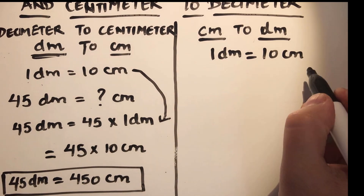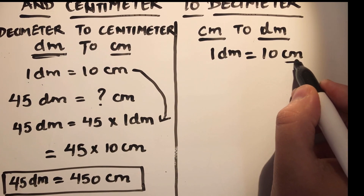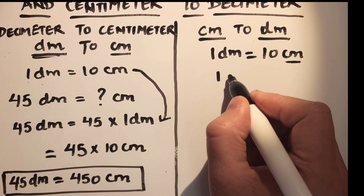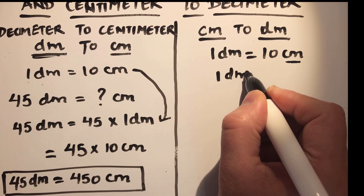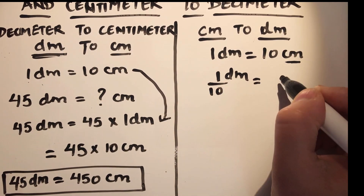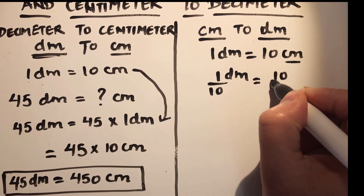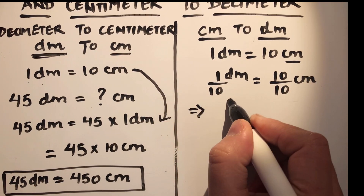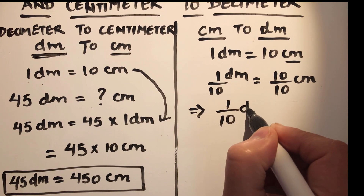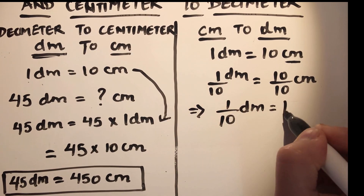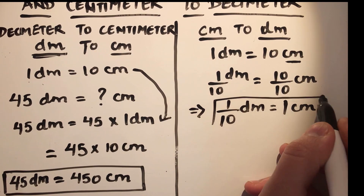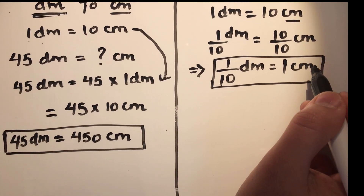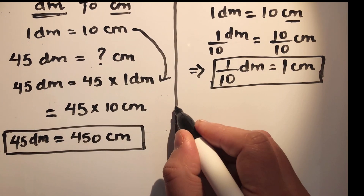We will divide both sides by 10 to get 1 centimeter. So 1 decimeter over 10 is equal to 10 over 10 centimeters. From this we can write 1 tenth of a decimeter is equal to 1 centimeter. This is the relation we are going to use to convert centimeters to decimeters.